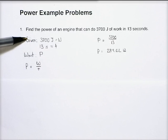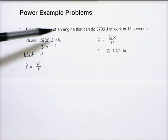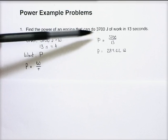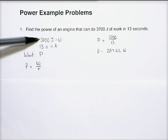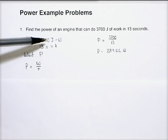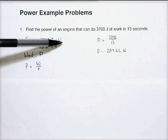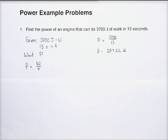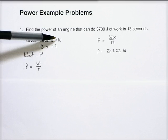So first, I write down my given quantities. That is, I read through the problem, and what do they tell me? Well, in this problem, I'm told that 3,700 joules of work is done. So notice that I wrote down 3,700 joules. So I write the unit, and then equals the symbol for what it is. Now, in this case, this capital W means work. Remember to be very careful as to when W means watt and when it means work, whether it's a unit or a quantity.